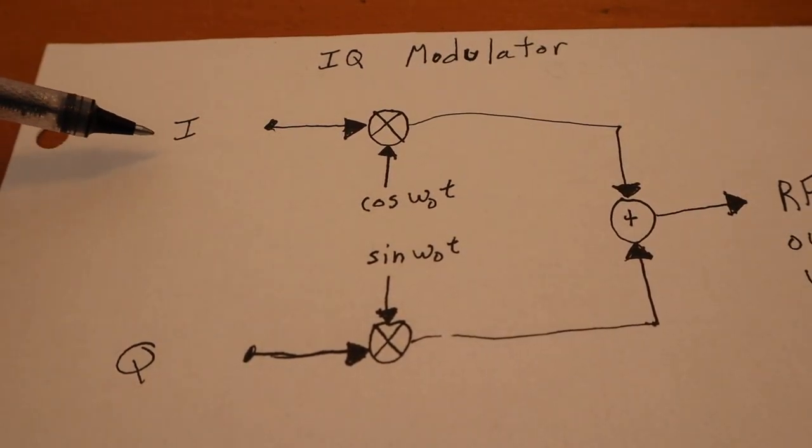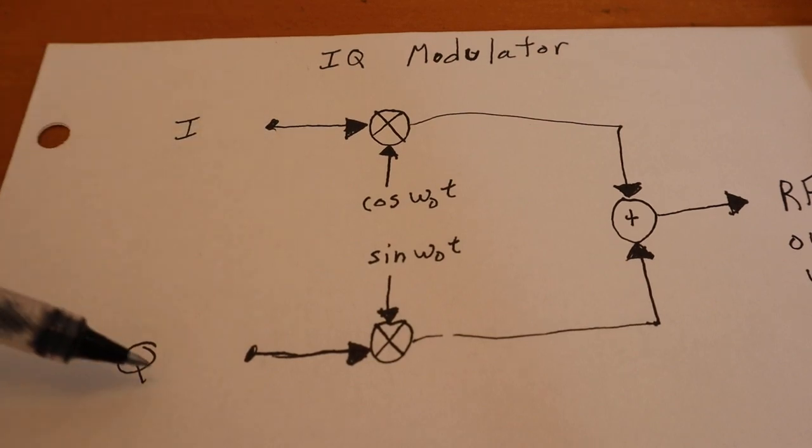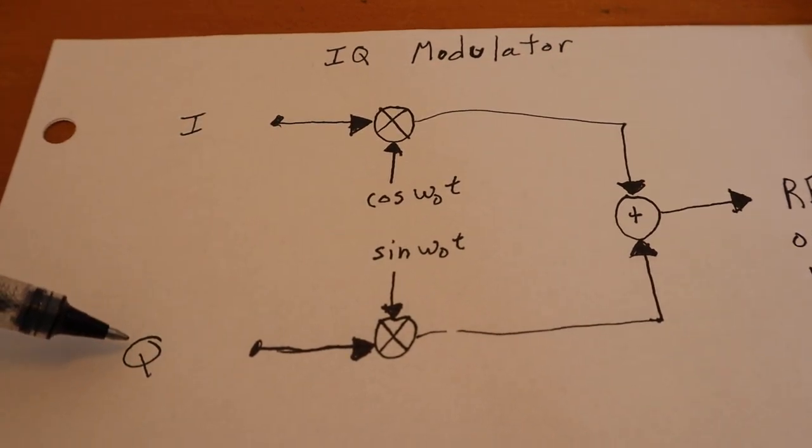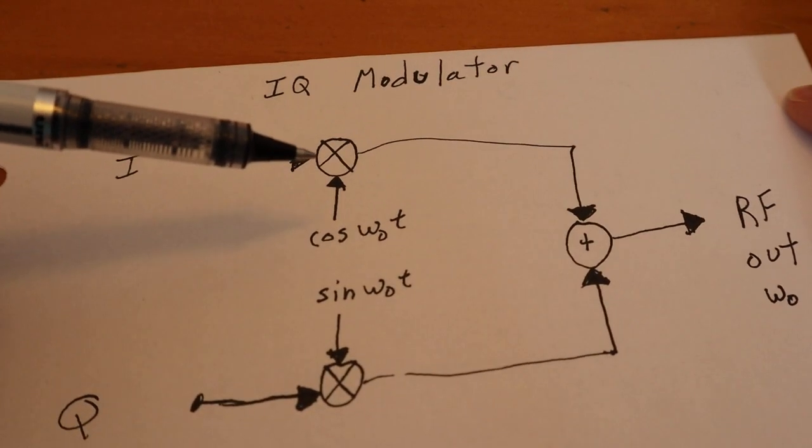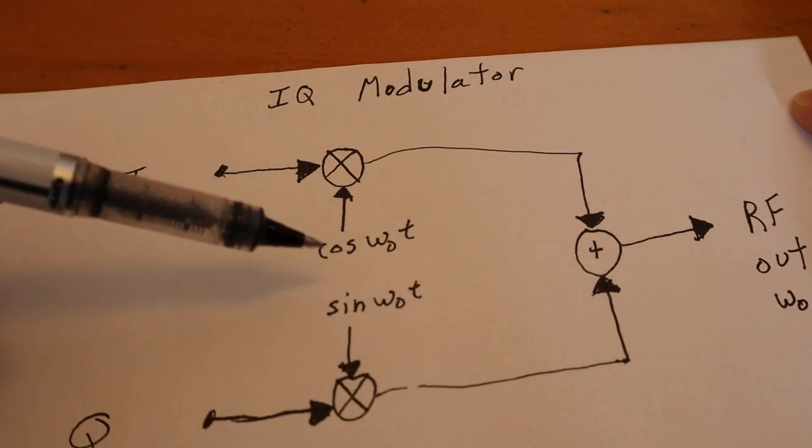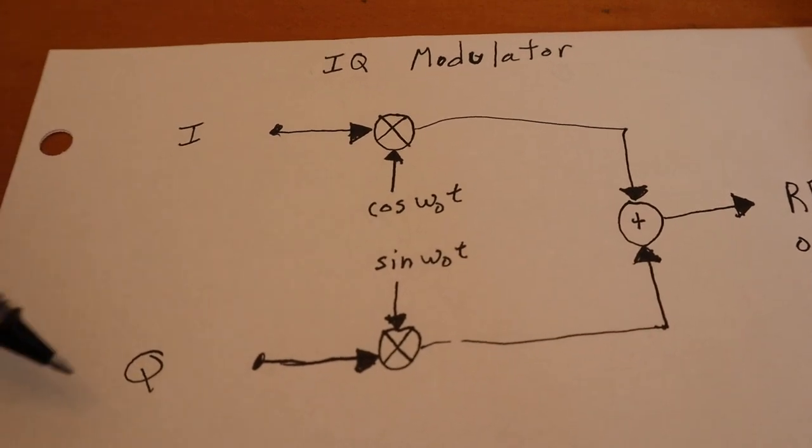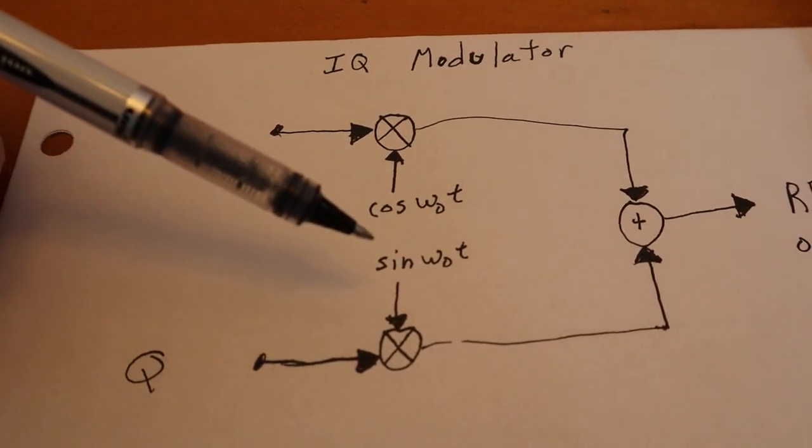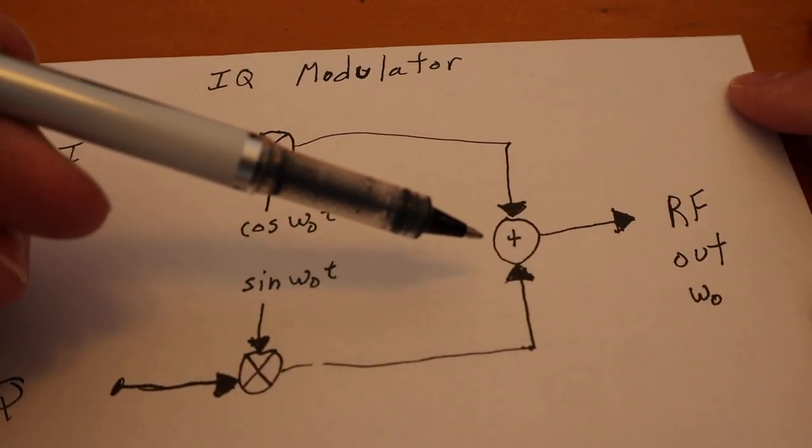So the I parts, or all the real values of the AM equation, would go here. All the imaginary or complex parts would go here from the AM equation. And when they get multiplied, the real parts would get multiplied by the cosine of the 100 kHz carrier. The imaginary parts would get multiplied by the sine of that 100 kHz carrier.